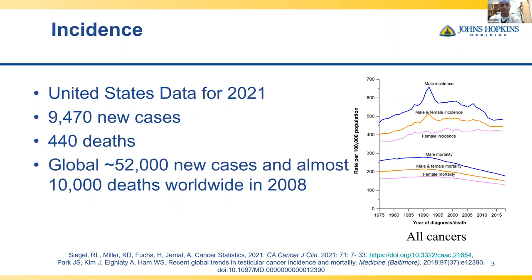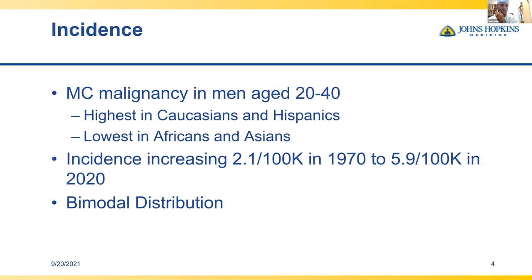Globally, there are around 52,000 new cases with almost 10,000 deaths worldwide, and that's old data. They anticipate that figure will be significantly higher, with the death trend not as favorable as the U.S. It's the most common malignancy in men age 20 to 40, highest in the U.S., very high in Caucasian and Hispanic populations, very low in African Americans and Asian populations. The incidence is increasing from 2.1 per 100,000 to roughly 6 in 2020, likely due to environmental exposures and toxins.